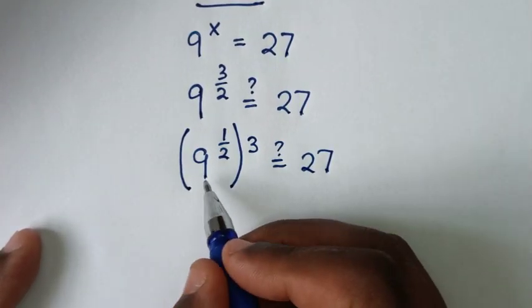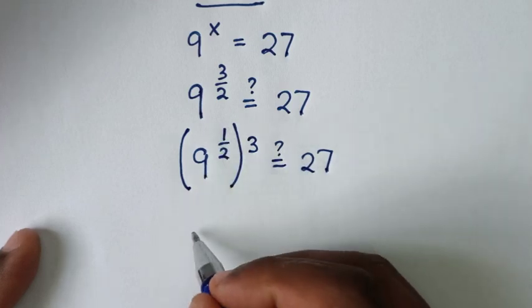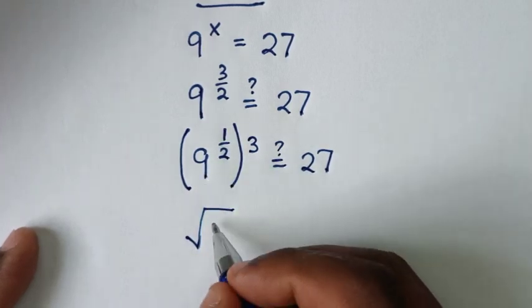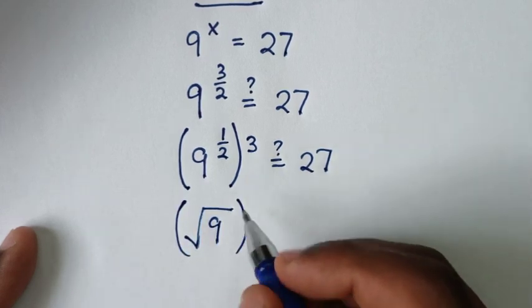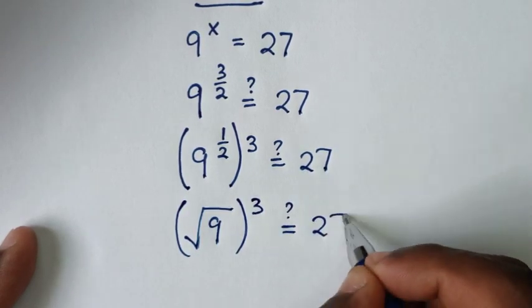Then from here, power of a half, it is square root. So it will be square root of this 9. Then bracket this power of 3 is it equal to this 27.